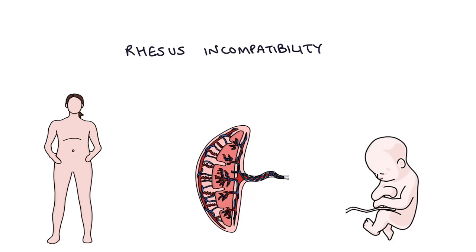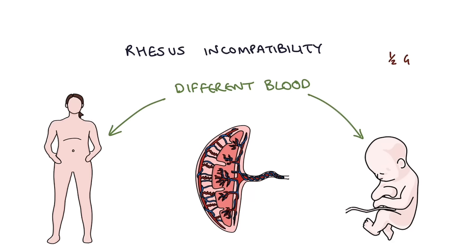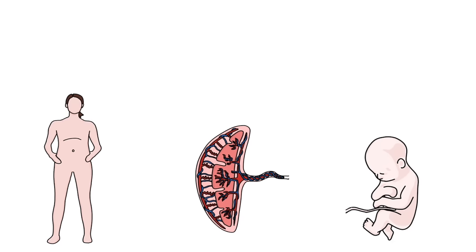To start with, it's important to realize that the mum and the baby have quite different blood types. The baby has its own unique blood type because it inherits half of its genetic makeup from its father. The mum and the baby's blood don't actually mix, but they come in very close contact with each other across the placental membrane.